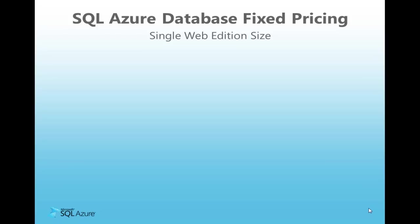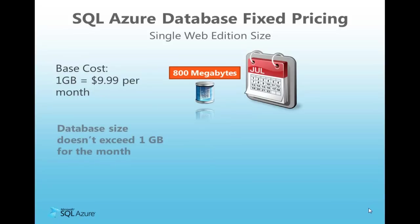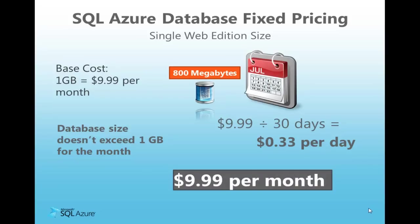For the following examples, we'll use a SQL Azure Web Edition database. In our first example, let's take a look at a database where daily peak size never exceeded 800MB over a month-long period of time. The nearest price increment is the 1GB Web Edition priced at $9.99 per month in US dollars. Using a 30-day month, the daily cost is about $0.33 a day, which equals $9.99 for the month.